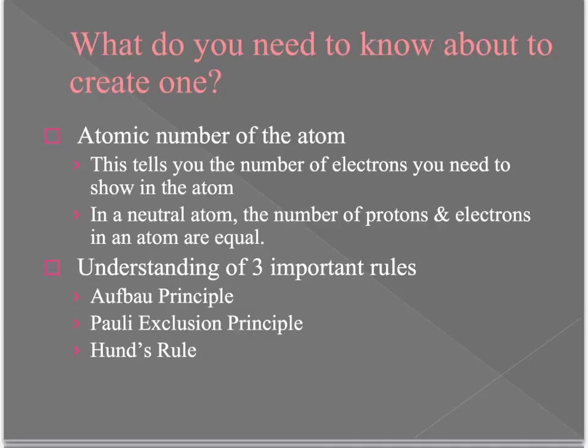The other things you need to understand are three rules that govern how orbital filling diagrams are set up. We'll be going through each one individually. Those rules are called the Aufbau principle, the Pauli exclusion principle, and Hund's rule.